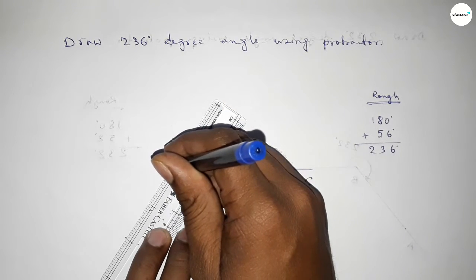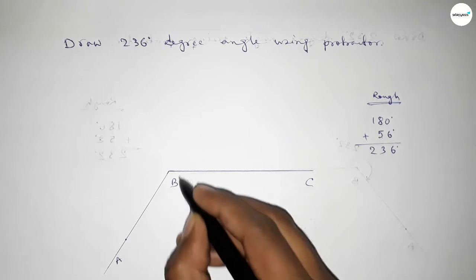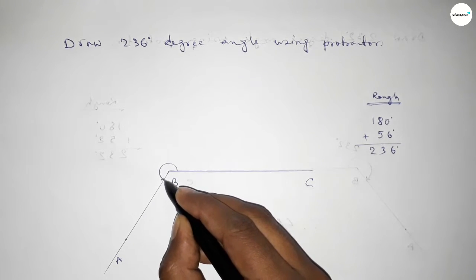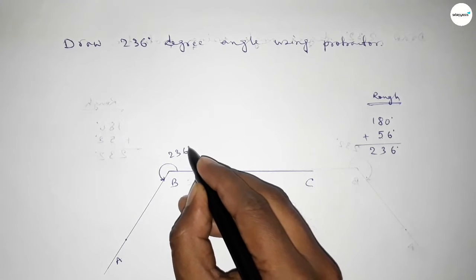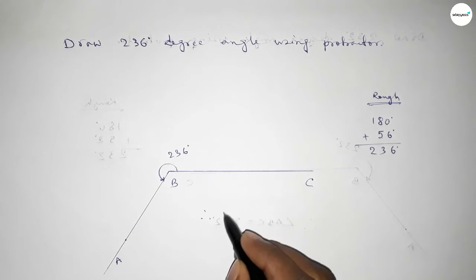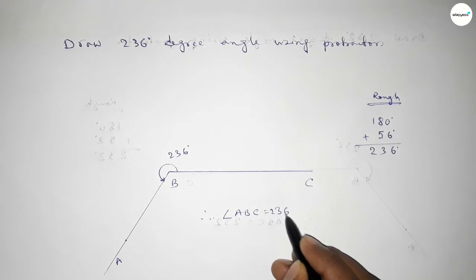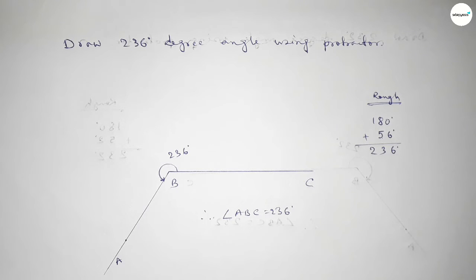we can get 236 degree angle. Now joining this side, taking here point A. So angle ABC, up to this, this is 236 degrees. Therefore angle ABC equal to 236 degree angle.